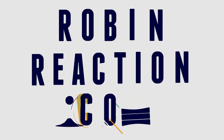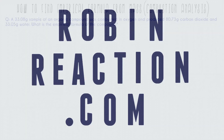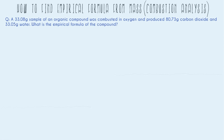Welcome to robinreaction.com. In this video, I'm going to go over how to find the empirical formula from mass, also called combustion analysis. Our question reads: a 33.08 gram sample of an organic compound was combusted in oxygen and produced 80.73 grams carbon dioxide and 33.05 grams water. What is the empirical formula of the compound?